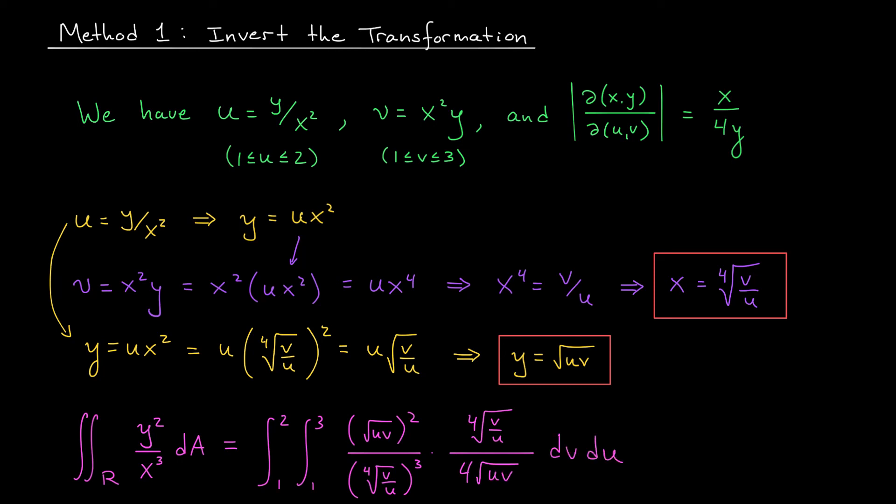Now, I know this looks ugly, but I promise everything simplifies very nicely. Your integral is going to evaluate to 3 quarters. So there you go, folks. This is one method for rewriting your integral given a non-constant Jacobian. Let me show you another little trick on the next slide.